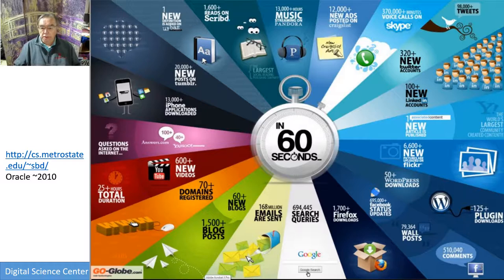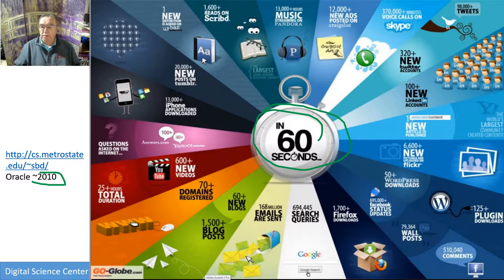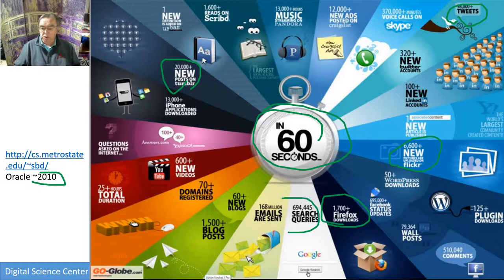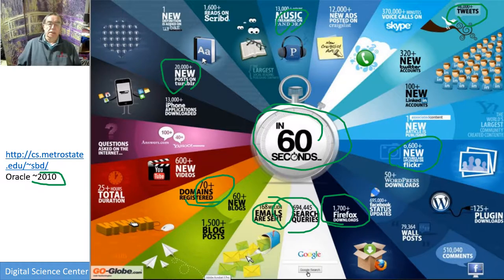Here is an old slide that seems to come from a talk from Oracle in 2010, when big data was first being discussed in conferences. It told you what happened in a minute: 600 new videos uploaded, 20,000 posts on Tumblr, 98,000 tweets, 100 new LinkedIn accounts, and activity across Flickr, WordPress, Firefox, search, emails, blogs, domains, and Pandora music. All of these numbers are much bigger now, but it's actually quite hard to get these basic pictures updated because people have moved on and don't discuss basic big data any longer.